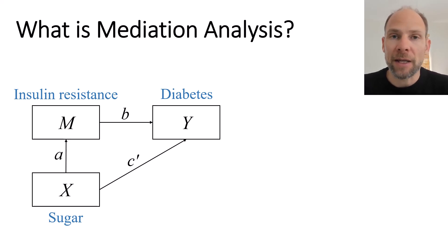M depends on X and Y depends on both M and X. As you can see here the arrows point from X to M and Y and then from M to Y, so there are two regression equations, one for each outcome variable.